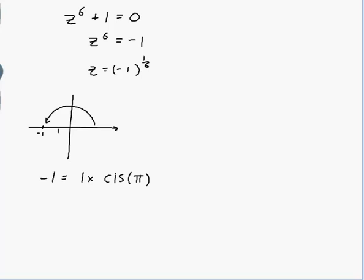Therefore z equals cis pi to the power of a sixth. And when you do powers of cis's, you just multiply the angle by the power. So that would be cis of pi on 6.